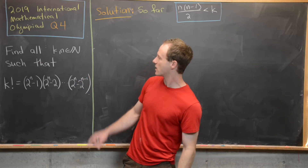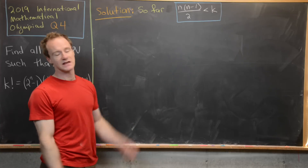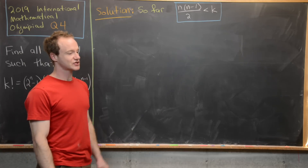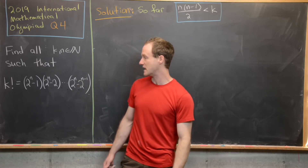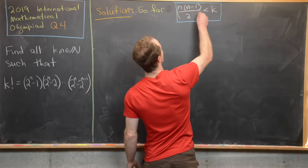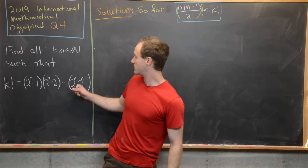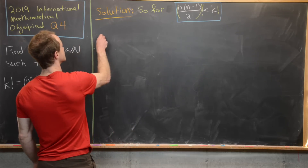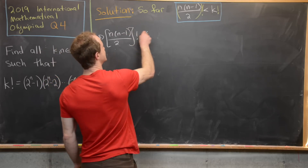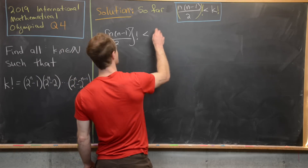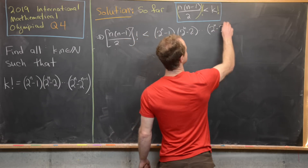Up to this point, we've argued that if we have a pair of numbers k and n that produce a solution to this equation, those numbers have to satisfy the inequality n times n minus one over two is less than k. This is helpful because it lets us create an inequality with only one variable, n. We can do that by taking the factorial of both sides. The factorial of the right hand side can be written in terms of n, so we have the quantity n times n minus one over two factorial being less than k factorial. But k factorial, if we have a solution to this equation, equals two to the n minus one times two to the n minus two all the way up to two to the n minus two to the n minus one.